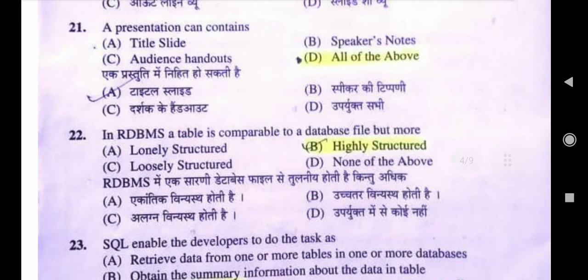Question 22: In RDBMS, a table is comparable to database files but more — the right answer is highly structured. RDBMS stands for Relational Database Management System, founded by E.F. Codd in 1970. RDBMS में tables को relational बोलते हैं, और इसमें rows and columns का combination होता है। Rows को tuple और record बोल सकते हैं, और columns को field और attribute। RDBMS structures are commonly used to perform four basic operations: create, read, update, and delete — known as CRUD operations.